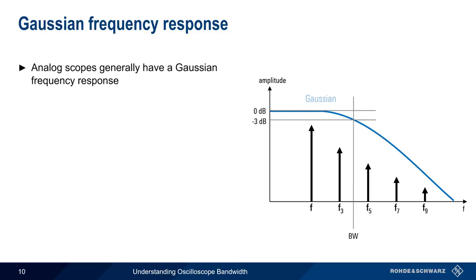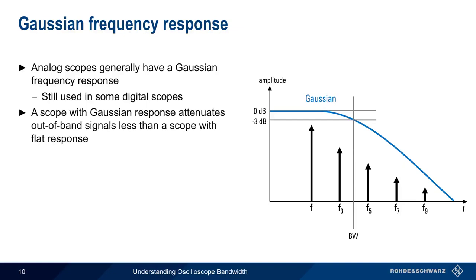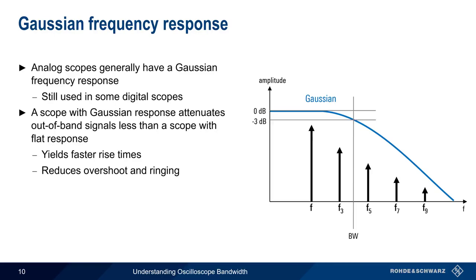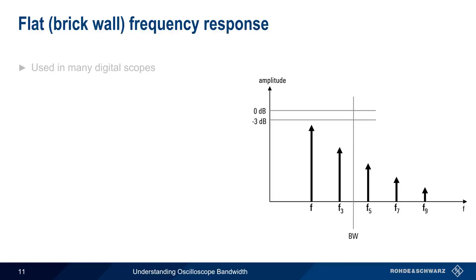Almost all older analog scopes have a Gaussian frequency response, but Gaussian responses are also still used in some digital oscilloscopes today. The greatest advantage of a Gaussian frequency response is that it attenuates out-of-band signals less than a scope with a flat frequency response. Because these higher order frequency components are not as severely attenuated, better measurements of fast rise times are possible, and the amount of overshoot or ringing on square wave signals is also reduced. The greatest downside to a Gaussian frequency response is that this more gentle roll-off also allows more noise into the oscilloscope.